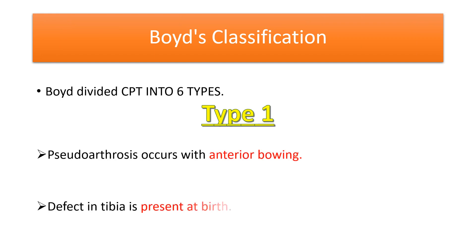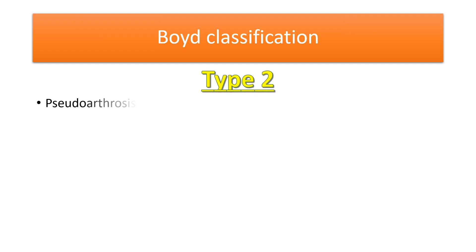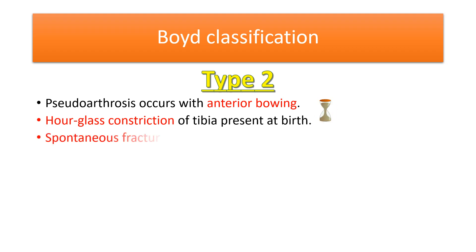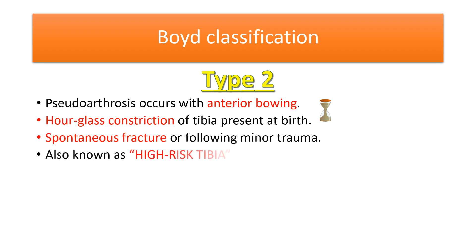In Boyd's Type 1, pseudarthrosis occurs with anterior bowing and the defect is present at birth. In Boyd's Type 2, spontaneous fracture often occurs following trauma. Type 2 is also known as high-risk tibia.